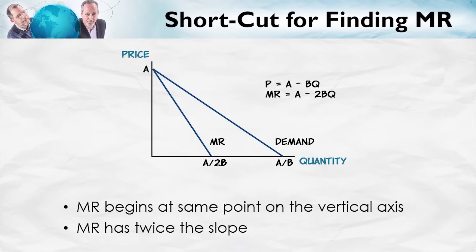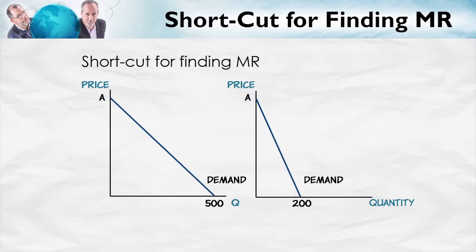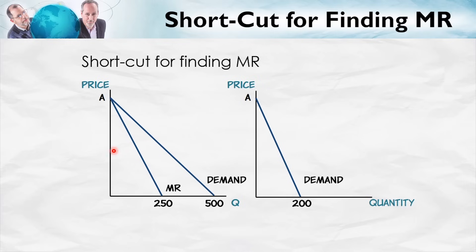Let's apply the shortcut to two demand curves. In the first case, the marginal revenue curve begins at the same vertical intercept and has twice the slope. If the demand curve hits the horizontal axis at 500, the marginal revenue curve hits it at 250. More generally, since it has twice the slope, the marginal revenue curve splits the distance between the vertical axis and the demand curve in half. For the second demand curve, which hits the horizontal axis at 200, the marginal revenue curve hits it at 100.